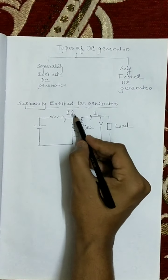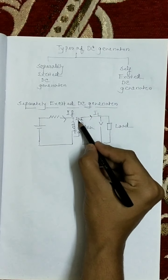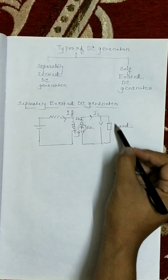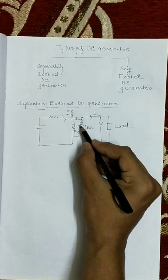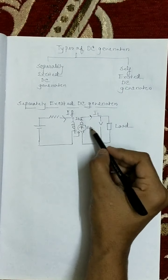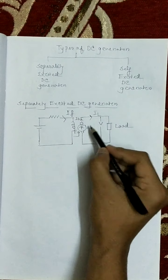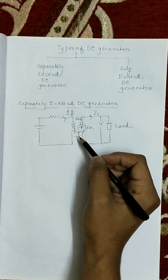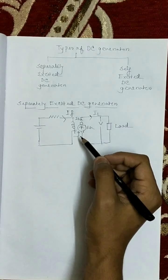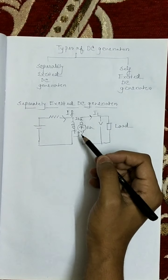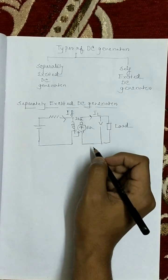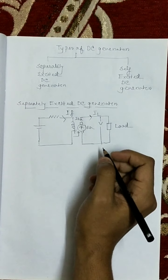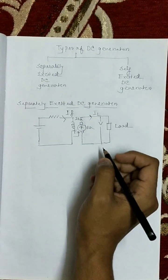Here, IF is field current, IA is armature current, and IL is load current. This is the load, this is our armature, this is armature resistance, and EG is the generating EMF. The field magnet winding is supplied from an independent external DC source, so this is called a separately excited DC generator.